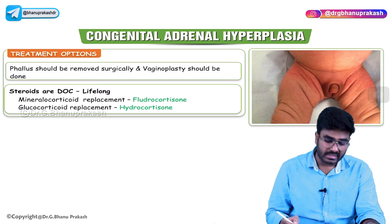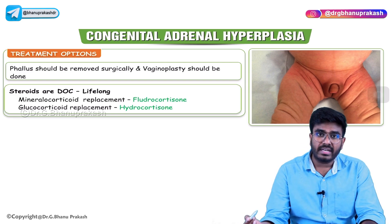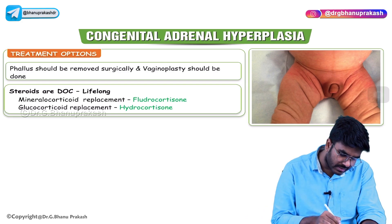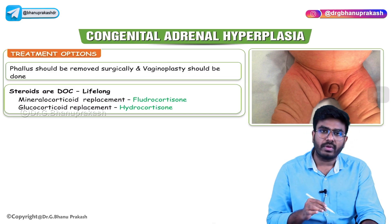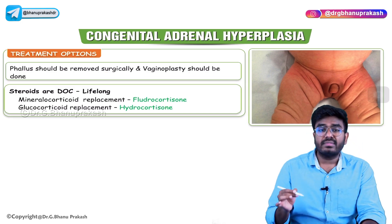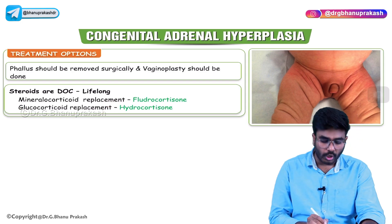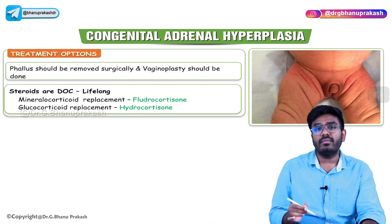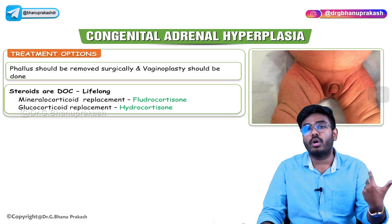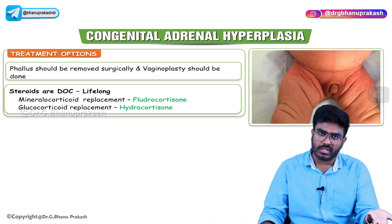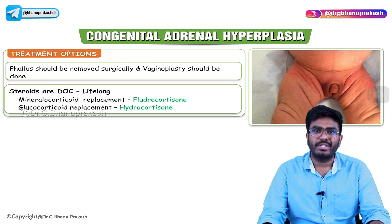For treatment: since this is a female, she doesn't need that enlarged clitoris which looks like a phallus or micropenis — that should be removed surgically, and we have to perform vaginoplasty to recreate the vagina. This female is also deficient of mineralocorticoids and glucocorticoids, so we have to replace both. Mineralocorticoid replacement is done with fludrocortisone and glucocorticoid replacement is done with hydrocortisone. We have to replace whatever is not being produced — cortisol and aldosterone are both absent, so we replace mineralocorticoids as well as glucocorticoids. Hope the video is helpful. Thank you.